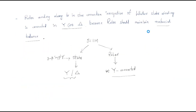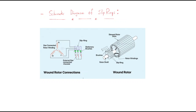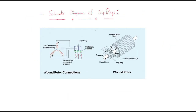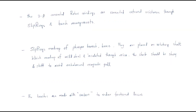This is the wound rotor connection. The three-phase star-connected rotor windings are connected to external resistance through the slip ring and brush arrangement. These three phases are each connected to a slip ring, which is a ring-like structure connected to brushes with external resistance. The slip rings are made up of phosphor bronze and brass — keep in mind this combination: phosphor bronze and brass.